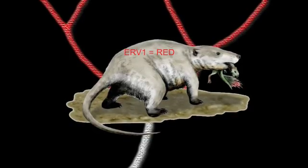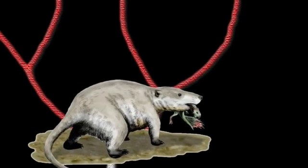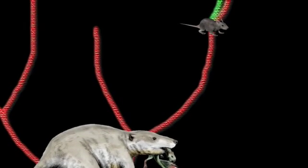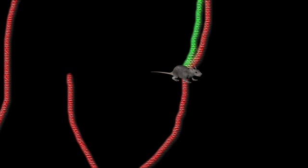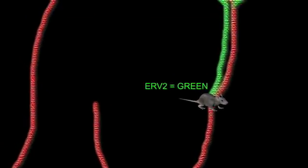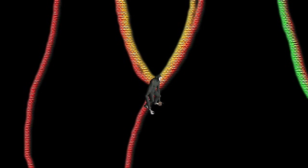Fast forward 30 million years. Different lineages have evolved from the original common ancestor, and there are now many different types of mammals in existence, all carrying ERV-1. A small rodent, let's call it Secundus Mausus, is the common ancestor of mice and rats, and is once again infected by a new species-specific retrovirus that becomes endogenous — this is ERV-2. In a different line, Secundus Apis, the common ancestor of all great apes, acquires a third retrovirus, ERV-3.